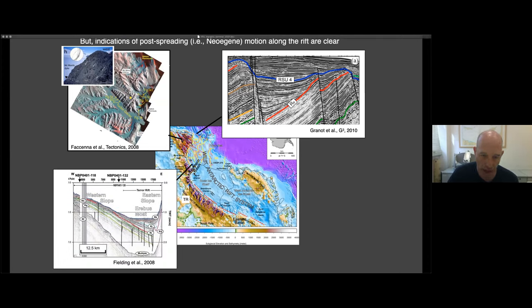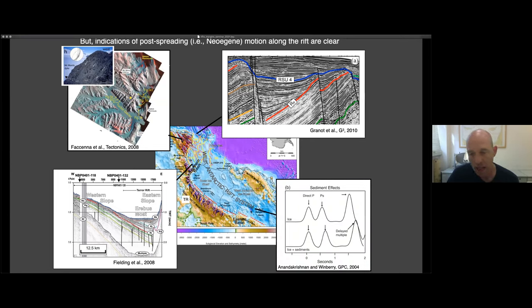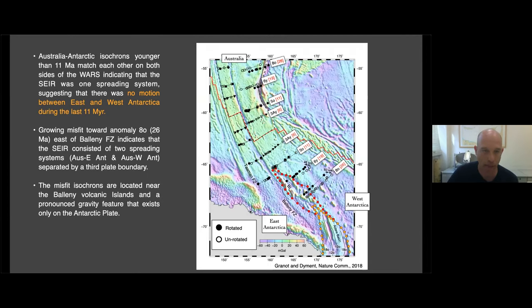Also the Terror rift. It's a tiny rift that have been formed during the Miocene. And also sub-ice troughs, from seismic observations. We know that there are no sediments within the troughs, suggesting that they were formed after the ice sheet was already covered this area. Meaning that they must have been formed during or after the Miocene. So we know that there is relatively young motion across the rift system.